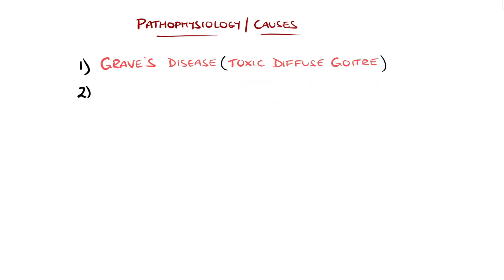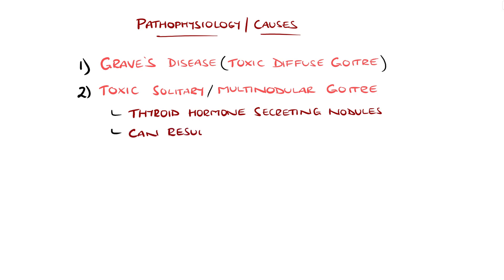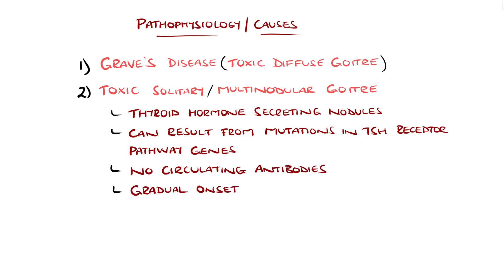Toxic nodular goiters, either solitary or multinodular, occur when there are nodules in the thyroid that are active and secreting thyroid hormone, and can result from gene mutations in TSH receptor pathways. Unlike Graves', there are no circulating antibodies, and the onset tends to be more gradual.